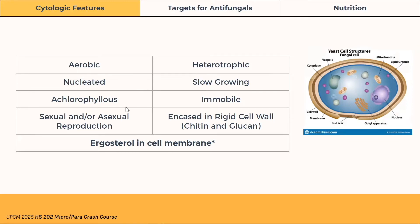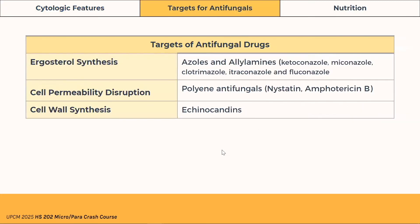They also reproduce sexually and/or asexually, usually via spores. They're heterotrophic, meaning they derive their nutrients from their environment. They're also slow growing compared to bacteria, and they are encased in a rigid cell wall made up of chitin and glucan. An important feature of the fungal cell is that their cell membrane is mainly composed of ergosterol, which is important because it's a target of antifungal drugs such as azoles and allylamines, which target and block ergosterol synthesis.